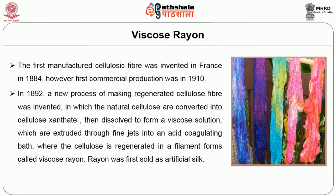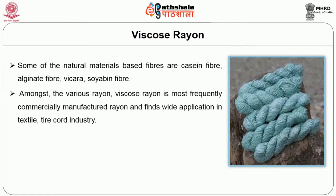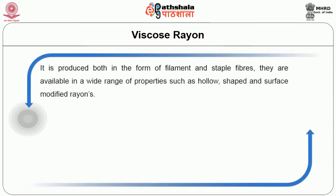Rayon was first sold as artificial silk. Some of the common rayons are Viscose Rayon, Acetate Rayon, and Cupramonium Rayon. Some of the natural material-based fibers are casein fibers, alginate fibers, Vicara, and soyabean fibers. Among the various rayons, Viscose Rayon is the most frequently commercially manufactured rayon and finds wide application in the textile and tire cord industry. Viscose Rayon has excellent properties suitable for woven and non-woven textile applications. It is produced both in filament and staple fiber forms and is available in a wide range of properties such as hollow fibers, shaped fibers, and surface-modified fibers.